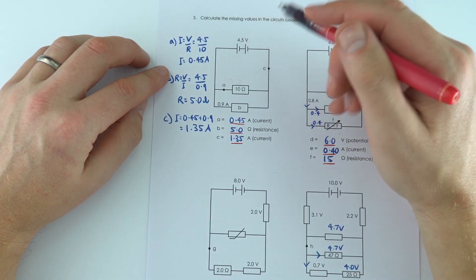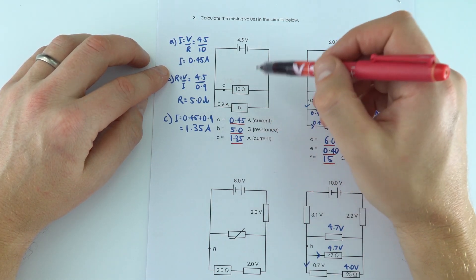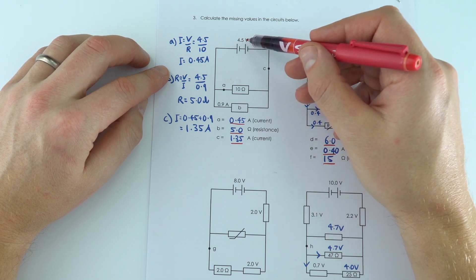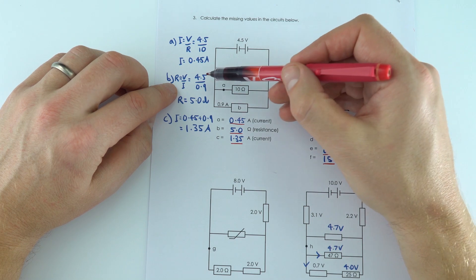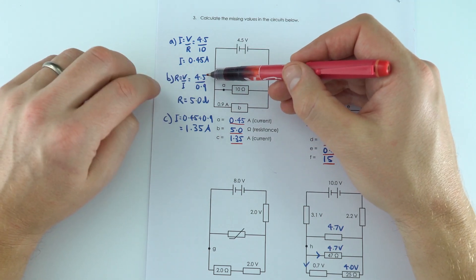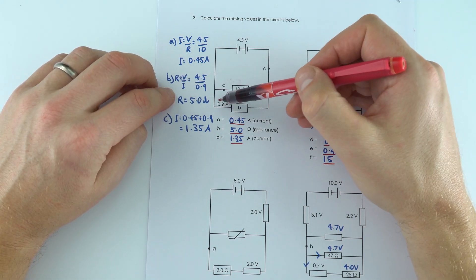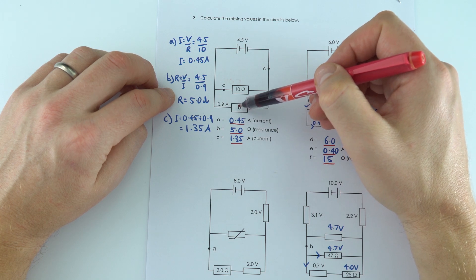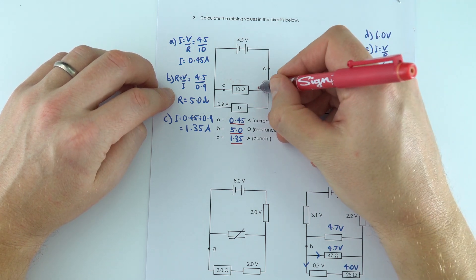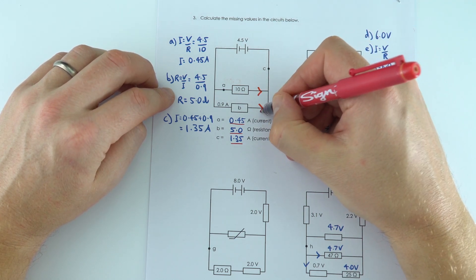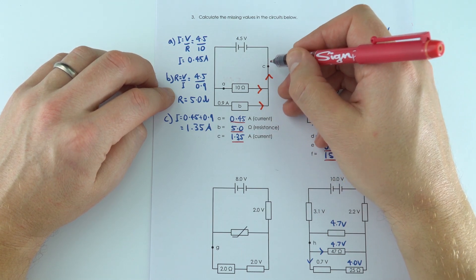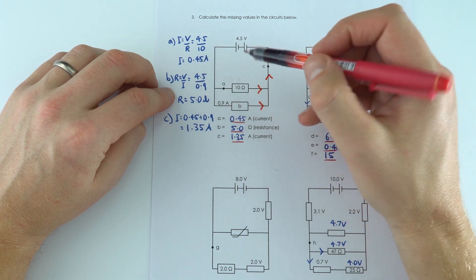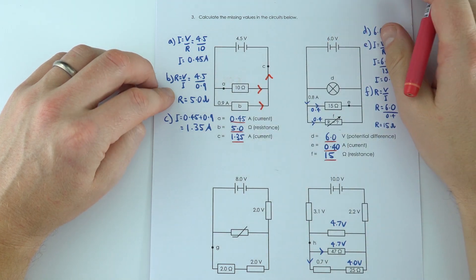Now at B we've got the current, we know the potential difference is 4.5, and so the resistance is equal to V over I, so that's equal to the potential difference of 4.5 divided by the current of 0.9 to find that that's got a resistance of 5 ohms. And if we know the current through A and the current on this part here, we can add them together to find the current that goes through C, so it's just 0.45 plus 0.9 which is 1.35.